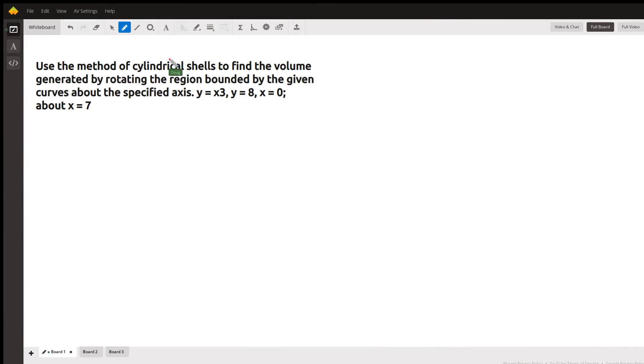Okay, you're given a region created by the graphs of those functions and asked to find the volume of the solid that is generated when you revolve that region about the line x equals seven. I was drawing a quick sketch. I know that y equals x cubed goes like this.